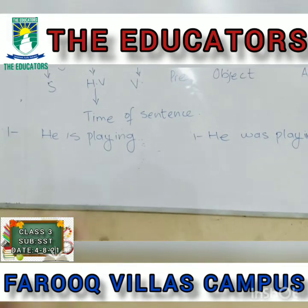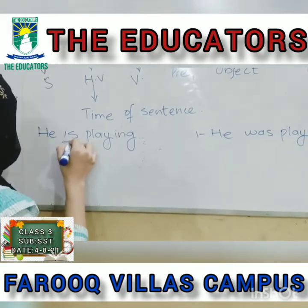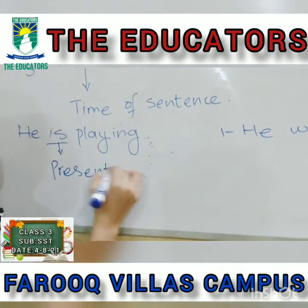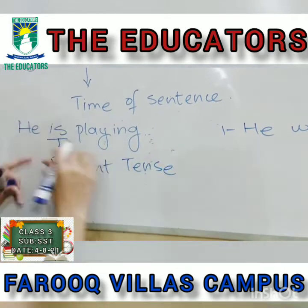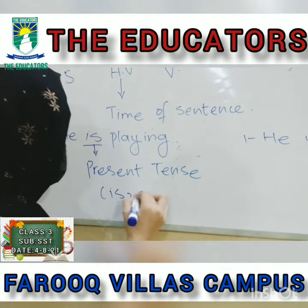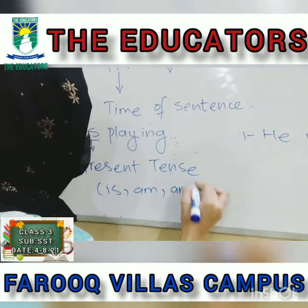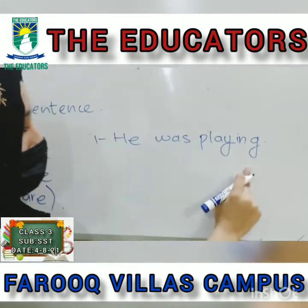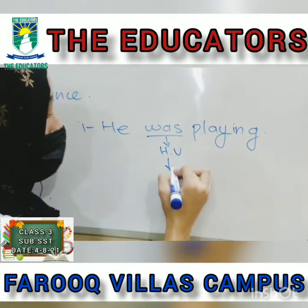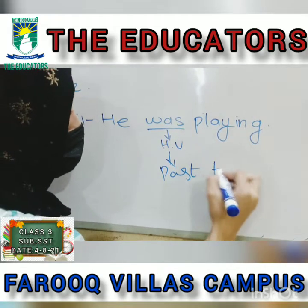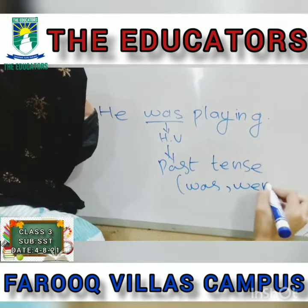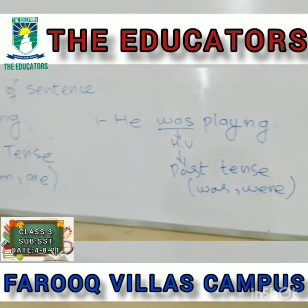For example: 'He is playing.' In this sentence 'is' is a helping verb which shows that the sentence is present tense, because we use 'is', 'am' and 'are' in present tense. Similarly: 'He was playing.' 'Was' is a helping verb and it is past tense, because 'was' and 'were' are used in the past tense.